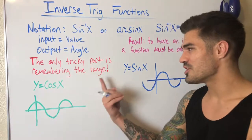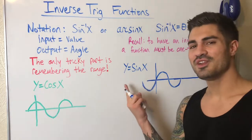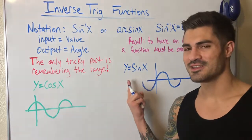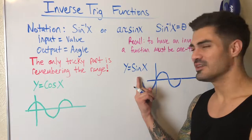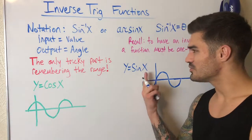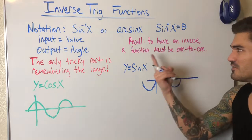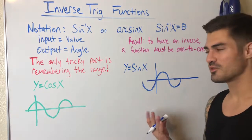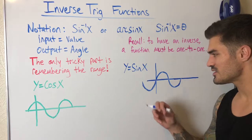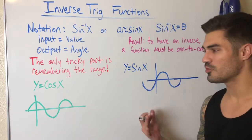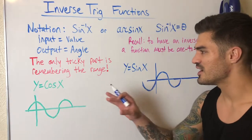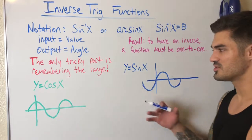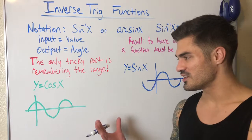There is a problem here — the only tricky part is remembering the range. There are infinitely many angles I can plug in to get one half. I can plug in pi over 6, but I can also add or subtract any multiple of 2π and still get one half. That's why we need to remember that to have an inverse, a function must be one-to-one. Looking at the graph, we can test this with the horizontal line test — both sine and cosine fail it miserably, intersecting infinitely many times.